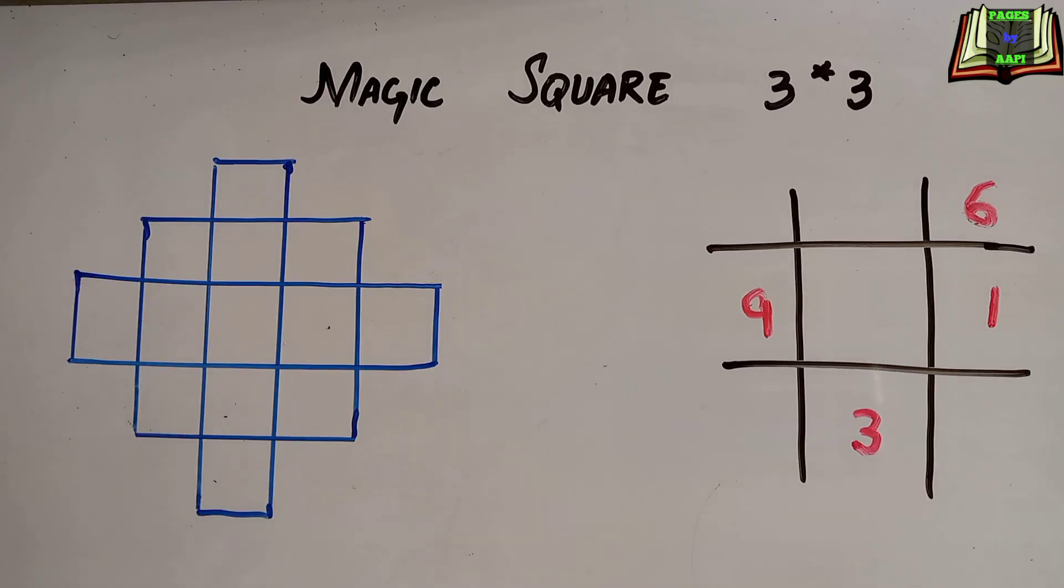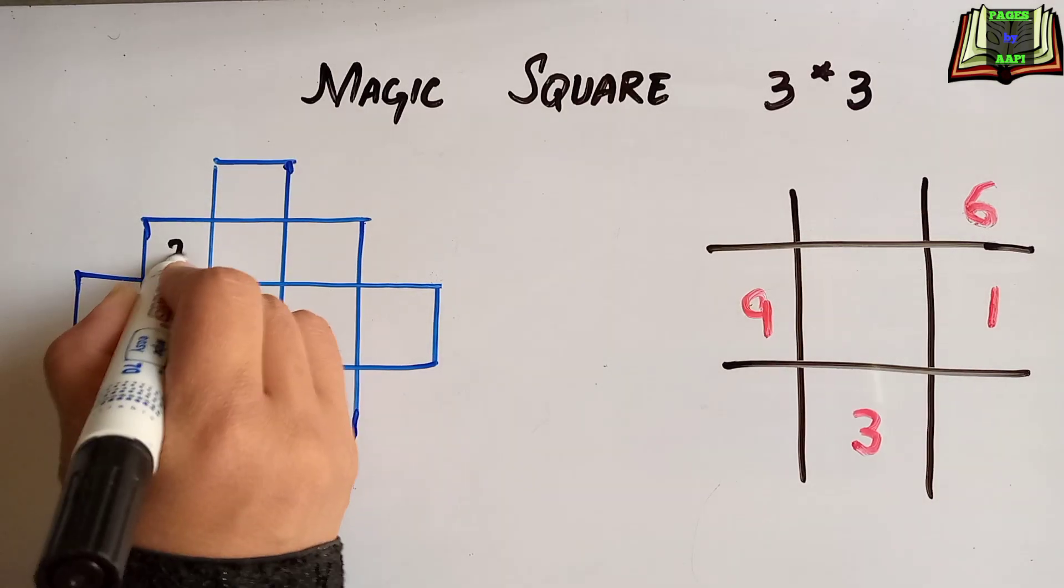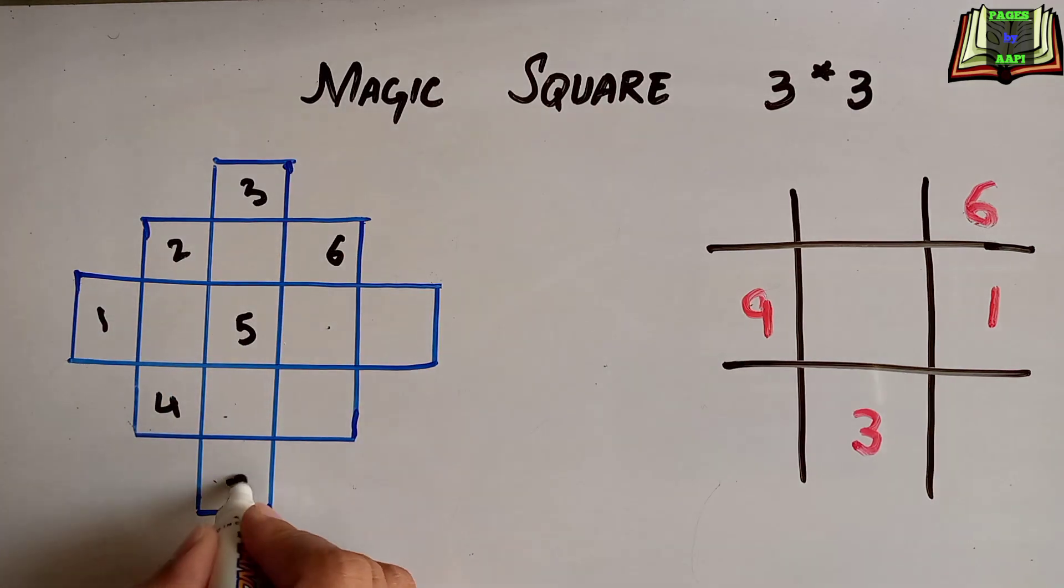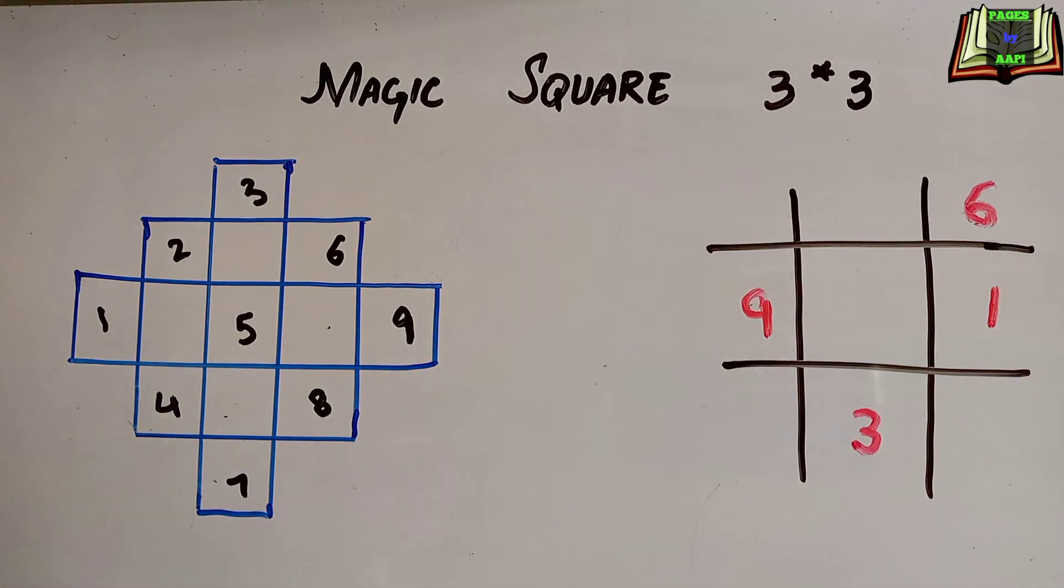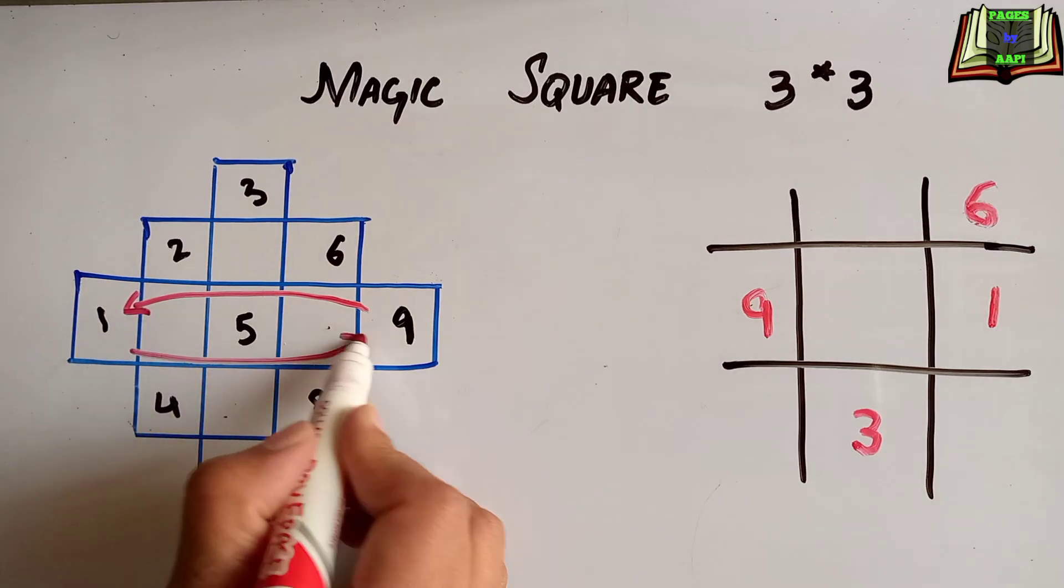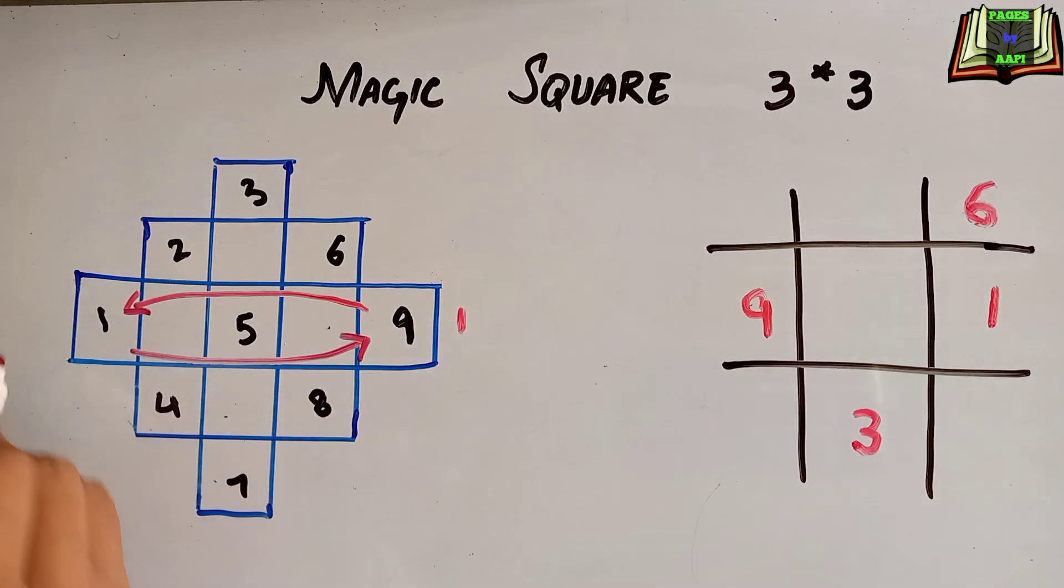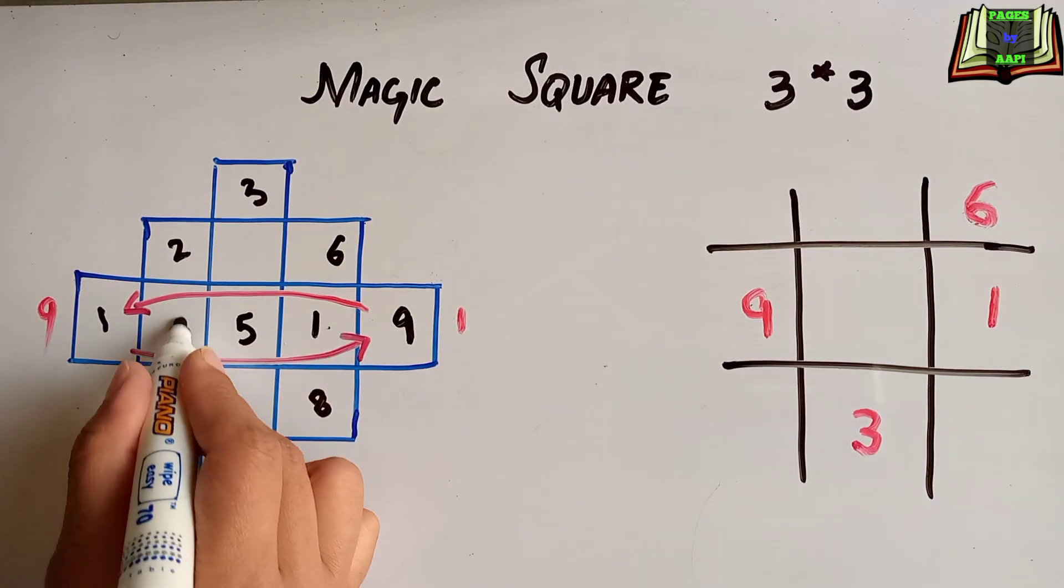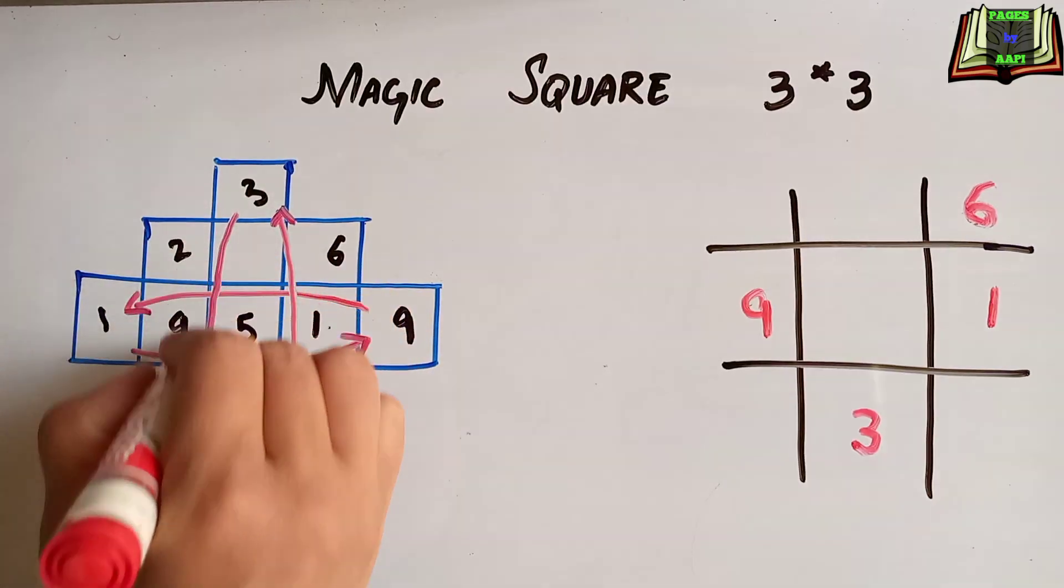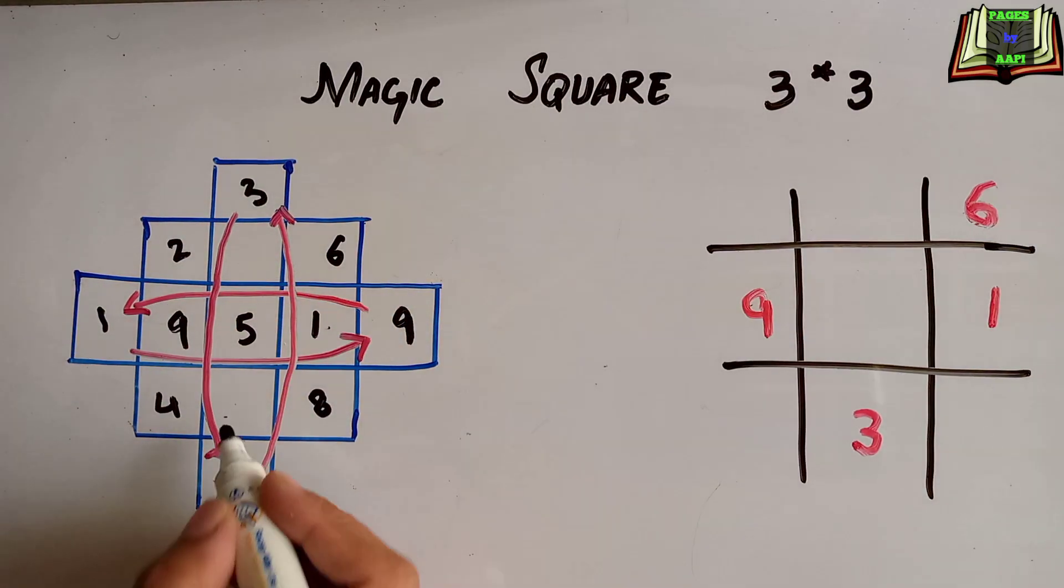For this we can write the numbers from 1 to 9 like 1, 2, 3, 4, 5, 6, 7, 8, and 9. Now we are going to swap the numbers: 1 with 9 and 9 with 1. Write the new numbers here. And swap number 3 with 7 and 7 with 3. Write the new numbers here.